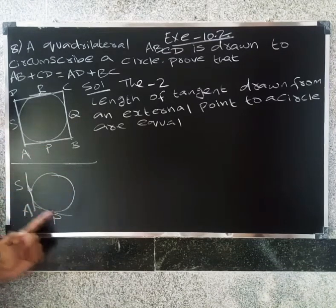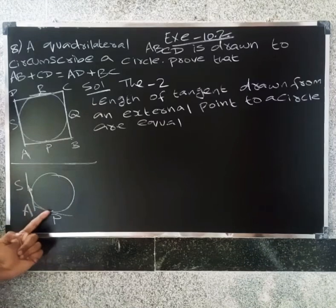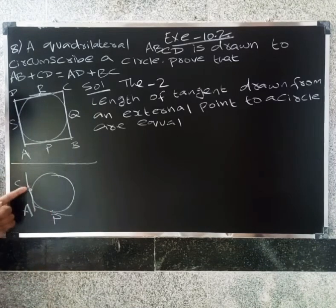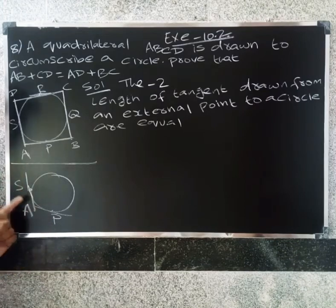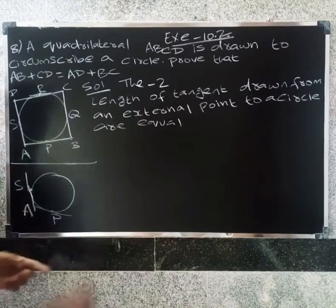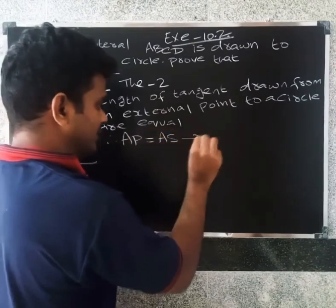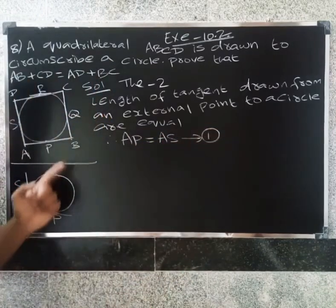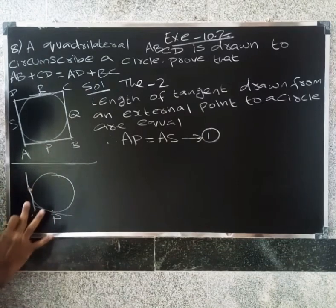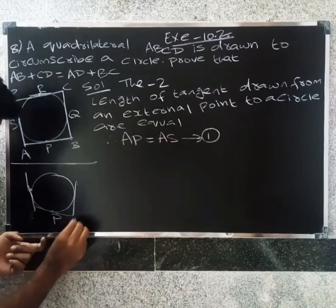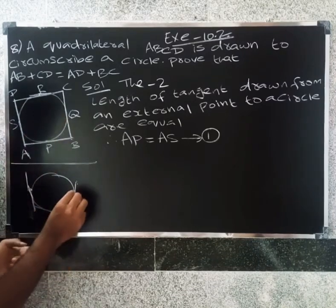From the theorem, we can see that AP = AS. This is the first equation. Next, from point B, we get BP = BQ.